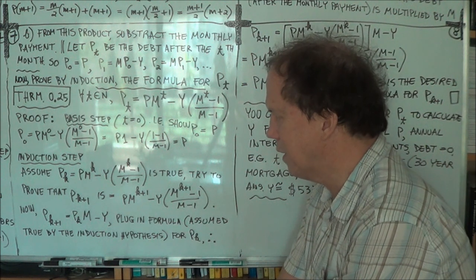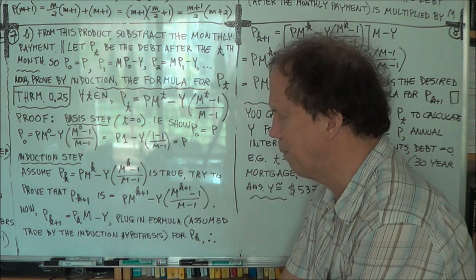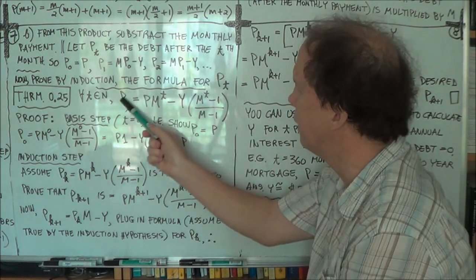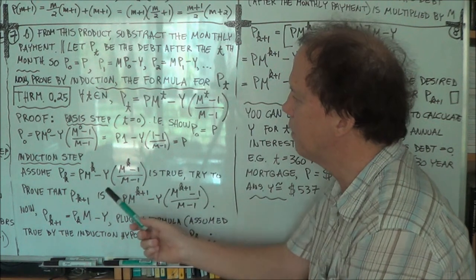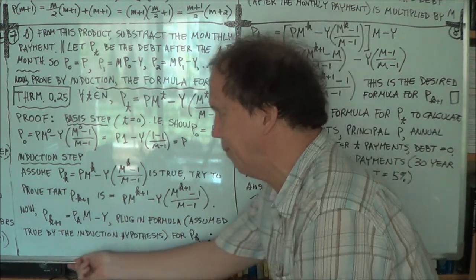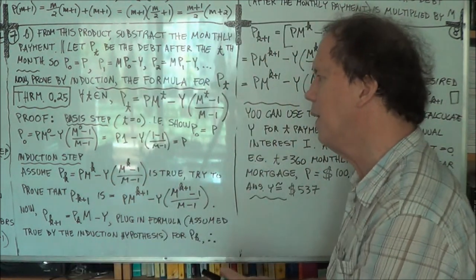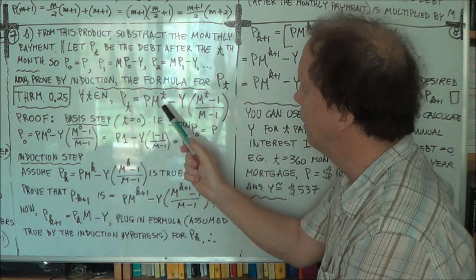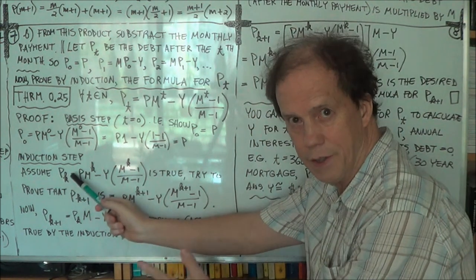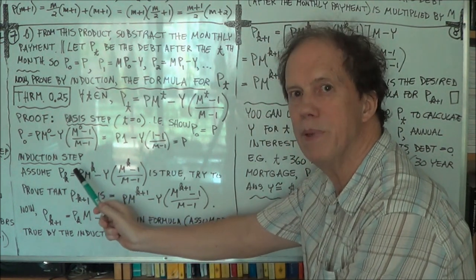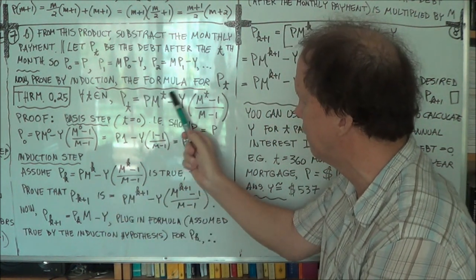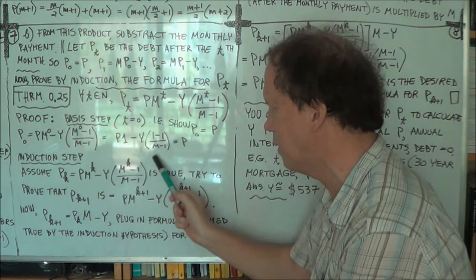Now the inductive step. We'll use the inductive hypothesis — we'll assume that this formula is true for a general K, that is, after K months. We assume P of K — the size of your debt after K months — is given by the formula with T replaced by K.